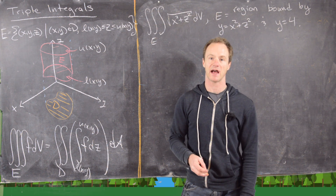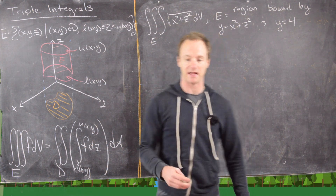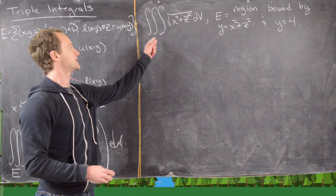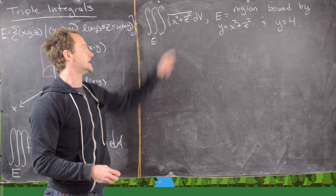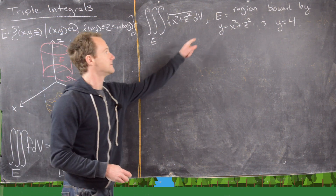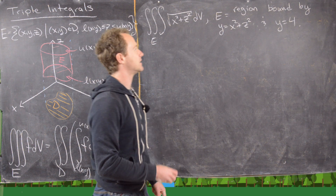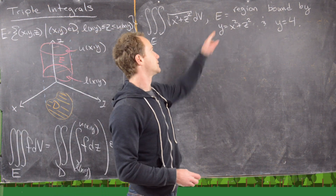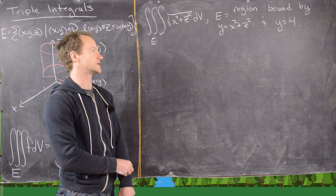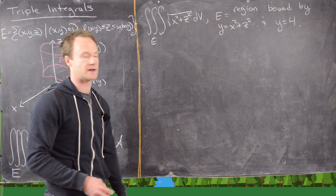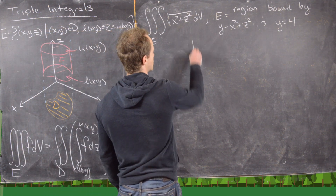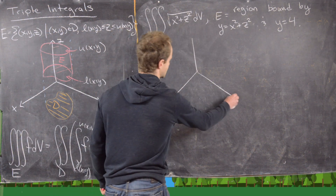We want to evaluate the triple integral over region E of the square root of x² + z² dV, where E is the region bounded by two surfaces: the surface y = x² + z² and the plane y = 4.